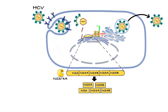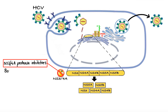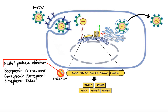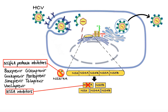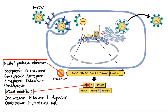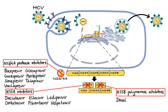Two proteins are important targets of anti-hepatitis C drugs: non-structural protein 5A, which regulates replication of the hepatitis C viral RNA, and non-structural protein 5B, which serves as the RNA-dependent RNA polymerase that produces negative sense RNA intermediates used to create copies of the positive sense viral RNA. Current hepatitis C treatments consist of combinations of direct-acting antivirals classified into three groups. The first group includes inhibitors of NS3/4A protease: boceprevir, glecaprevir, grazoprevir, paritaprevir, simeprevir, telaprevir, and voxilaprevir. The second group includes inhibitors of NS5A: daclatasvir, elbasvir, ledipasvir, ombitasvir, pibrentasvir, and velpatasvir. The third group includes inhibitors of NS5B polymerase: dasabuvir and sofosbuvir.